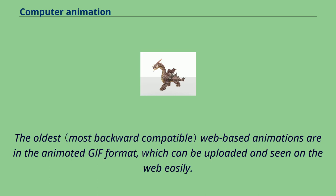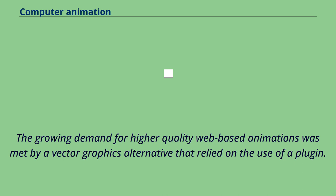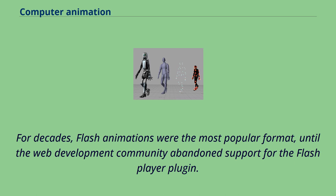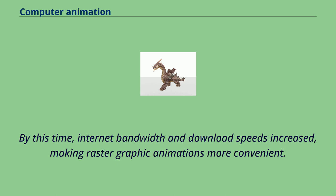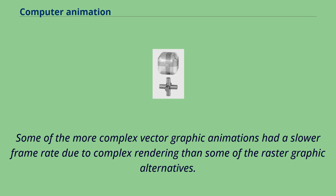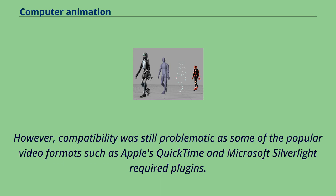The oldest web-based animations are in the animated GIF format, which can be uploaded and seen on the web easily. However, the raster graphics format of GIF animation slows the download and frame rate, especially with larger screen sizes. The growing demand for higher-quality web-based animations was met by a vector graphics alternative that relied on the use of a plugin. For decades, Flash animations were the most popular format, until the web development community abandoned support for the Flash Player plugin. Web browsers on mobile devices never fully supported the Flash plugin. By this time, internet bandwidth and download speeds increased, making raster graphic animations more convenient. Many of the GIF and Flash animations were already converted to digital video formats, compatible with mobile devices and reduced file sizes via video compression technology. However, compatibility was still problematic as some popular video formats such as Apple's QuickTime and Microsoft Silverlight required plugins.